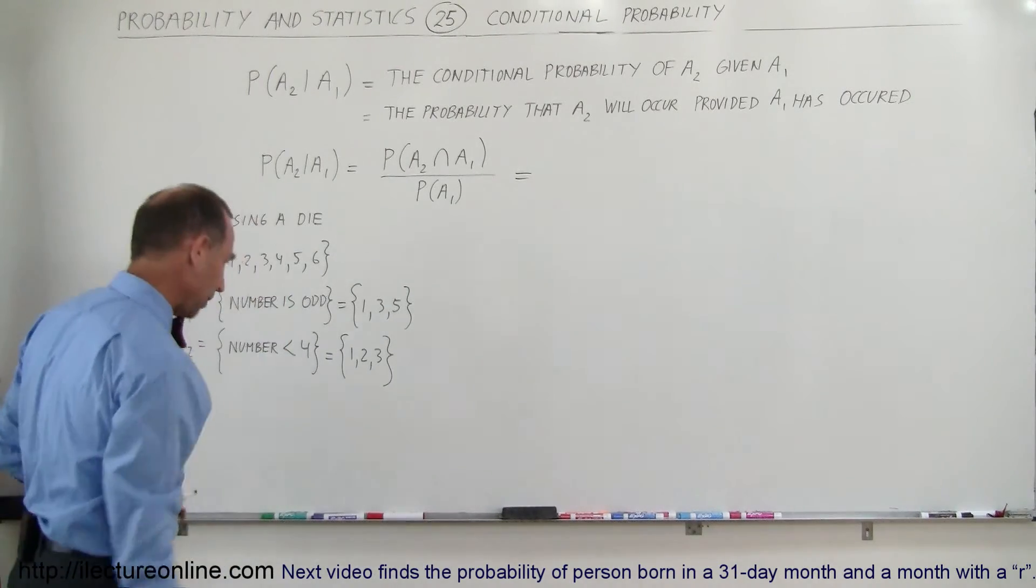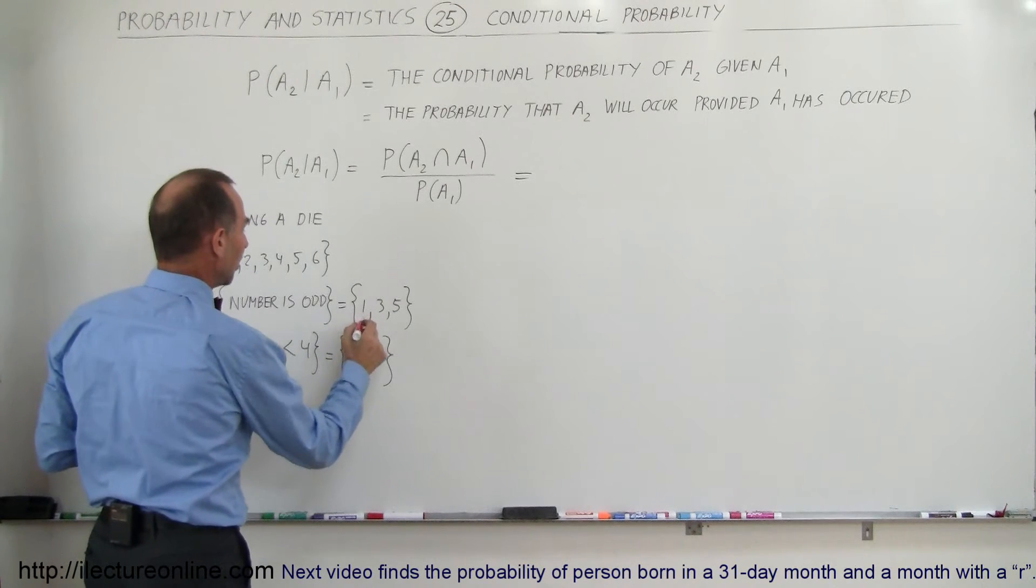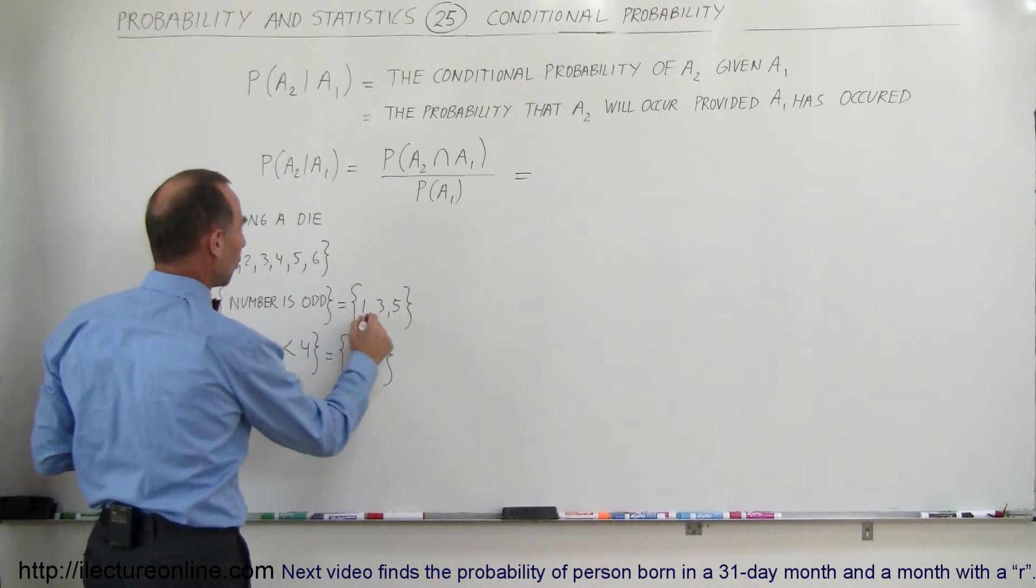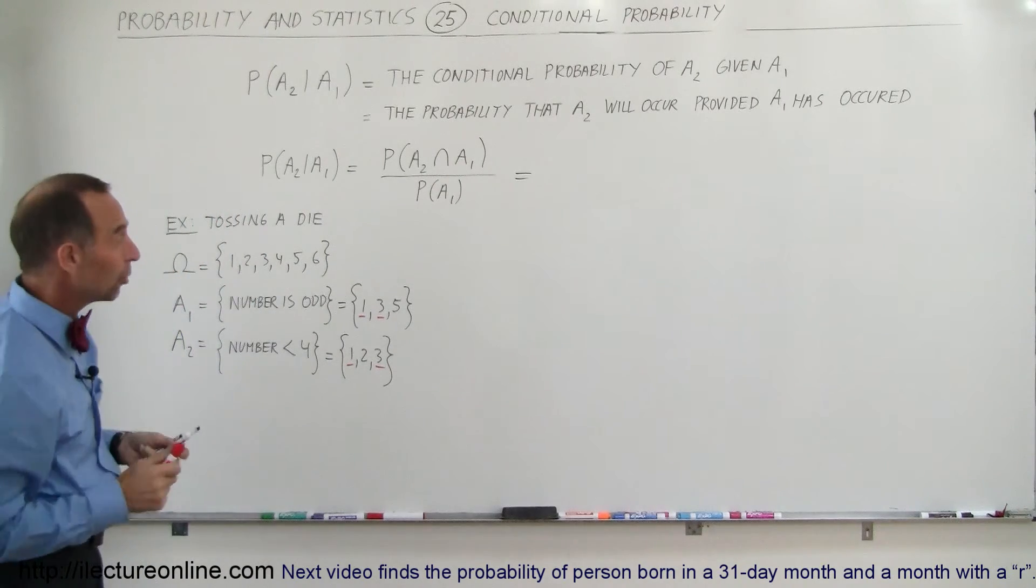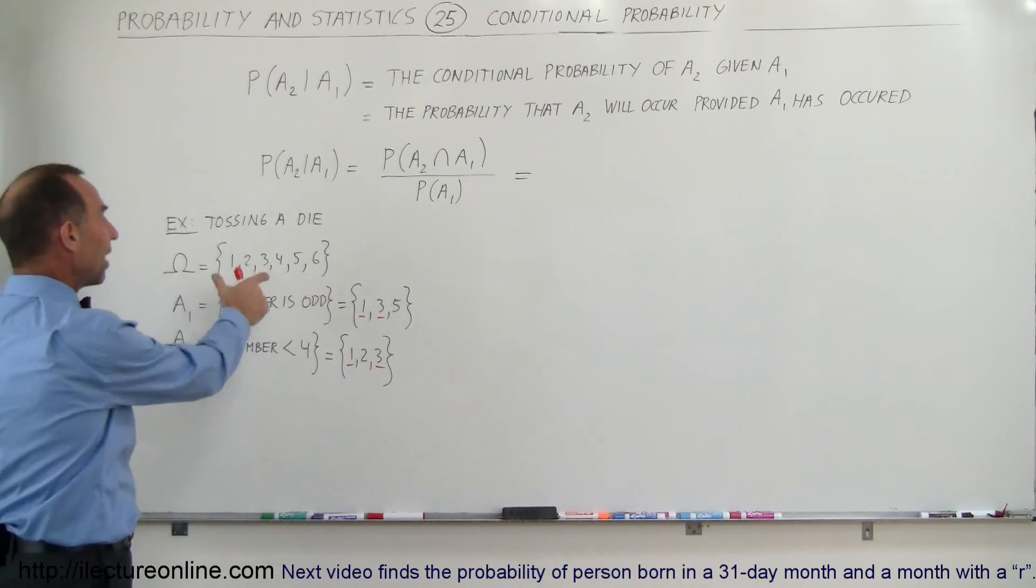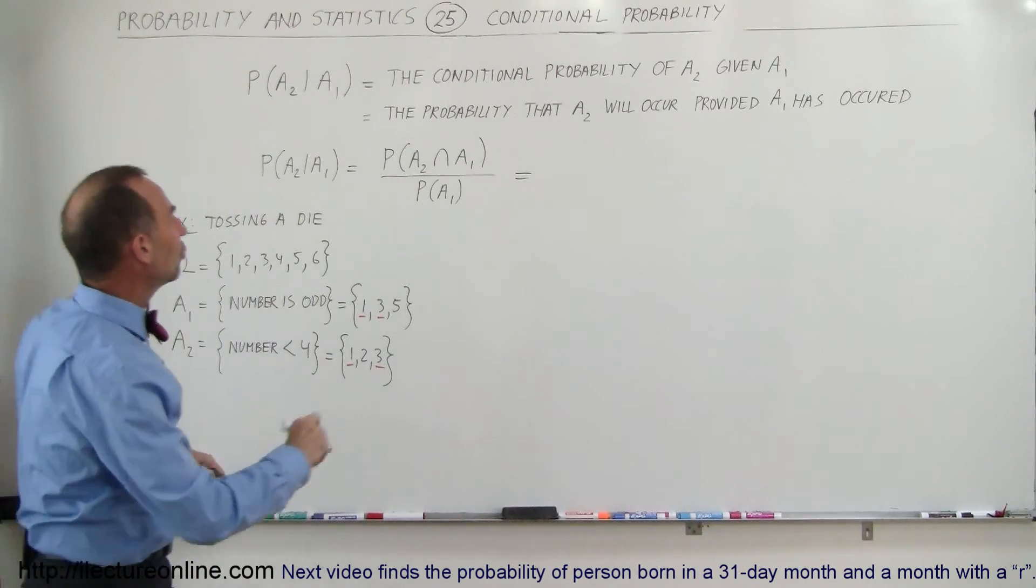Let's see, where's my red pen? Here's my red pen. The number is odd and the number is less than 4. So 1 and 3 is both odd and less than 4. There are two numbers, two elements that belong to the sample space that is the intersection of A1 and A2.